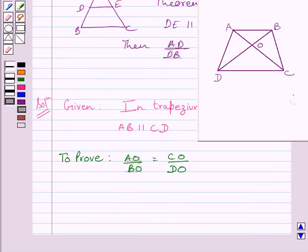We will draw OE parallel to AB. Now, here we have drawn OE parallel to AB. So, we can write construction: Through O, draw OE parallel to AB.